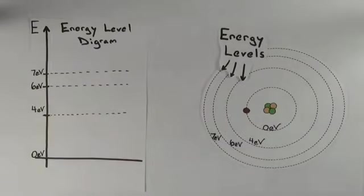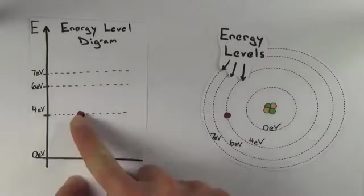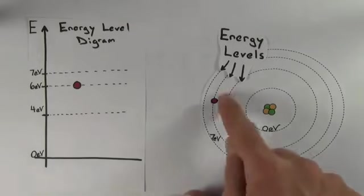Let's say our pretend atom has electron energy levels of 0 eV, 4 eV, 6 eV, and 7 eV.